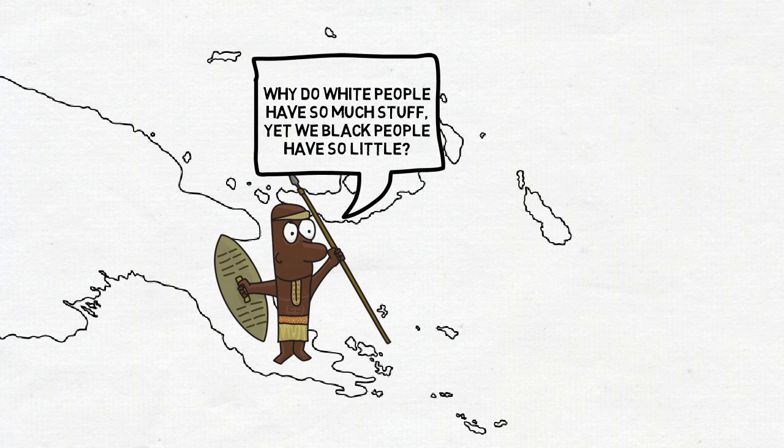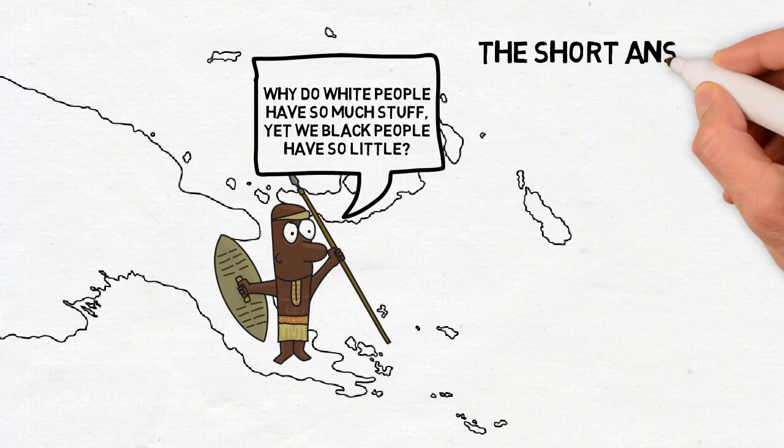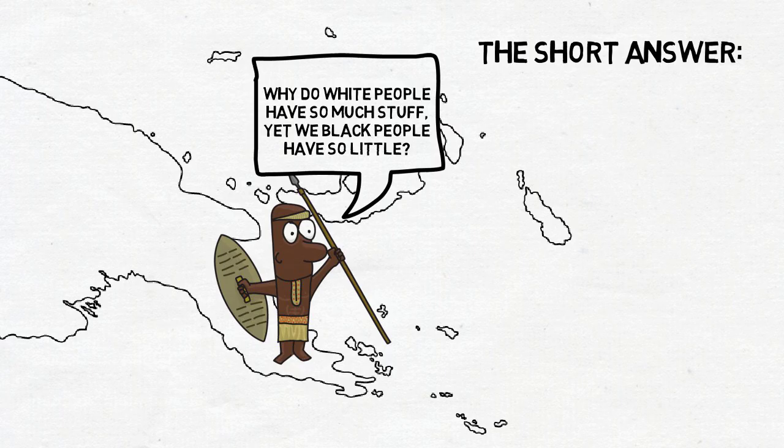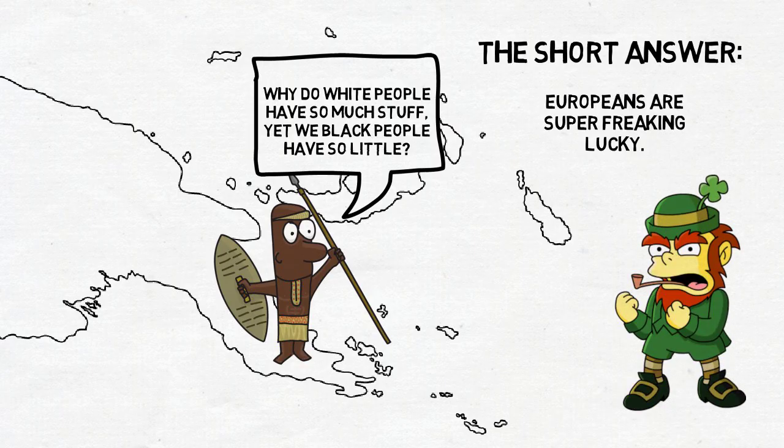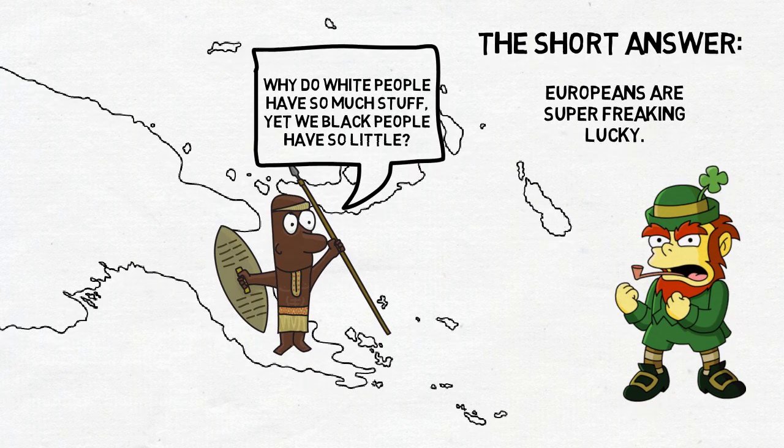He details evidence that points to the environment rather than biological differences between different groups of people for their success. He goes back over 13,000 years to discover why the West, rather than the East, Africa, or the Native Americans have dominated the world. The argument that he points to is that European dominance is a result of opportunity and necessity rather than any kind of particular ingenuity. That there was a chain of events that led them to the position they are in now.